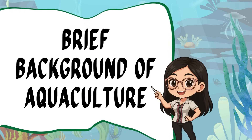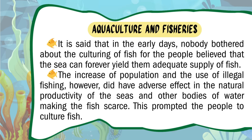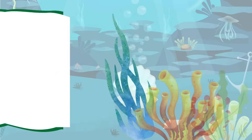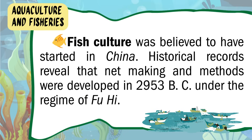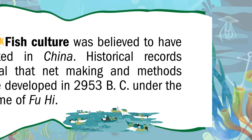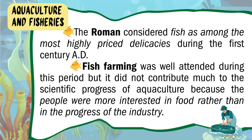Brief Background of Aquaculture. Fish culture was believed to have started in China. Historical records reveal that net making and methods were developed in 2953 BC under the regime of Fuhai. The Romans considered fish as among the most highly priced delicacies during the first century AD. Fish farming was well attended during this period but it did not contribute much to the scientific progress of aquaculture, because the people were more interested in food rather than in the progress of the industry.